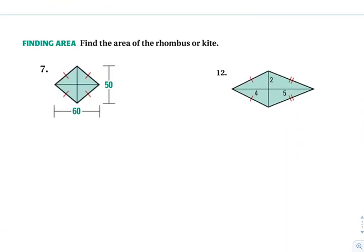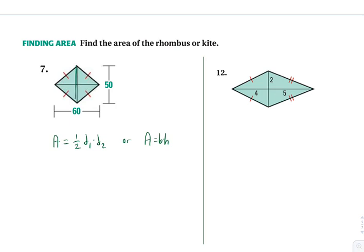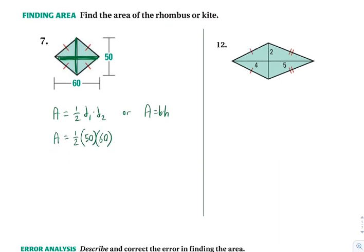For the rhombus, we can use area equals one half D1 times D2, or area equals base times height. We're given the lengths of both diagonals, so the easier one to use is the diagonal formula. We've got area equals one half of 50 times 60. That's one half of 3,000, so the area is 1,500.